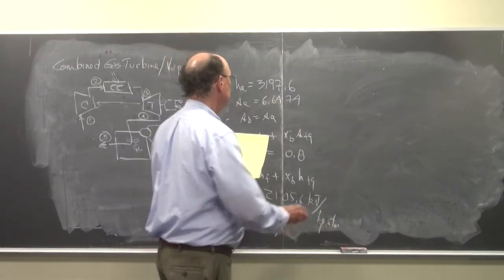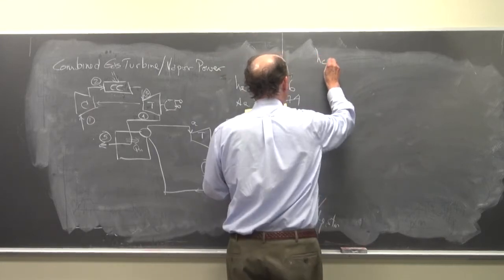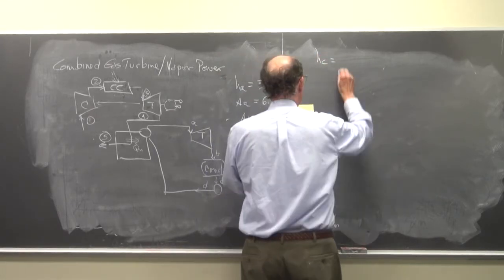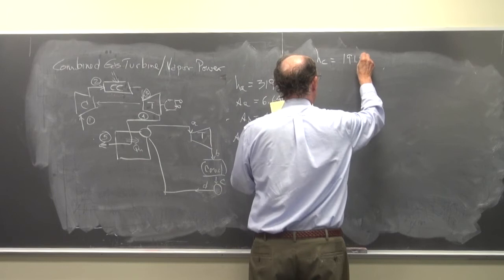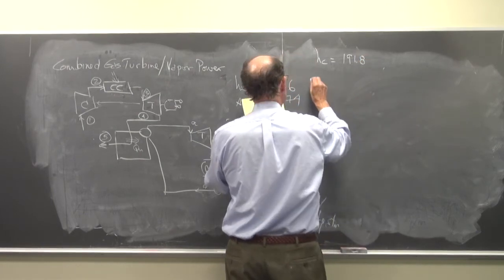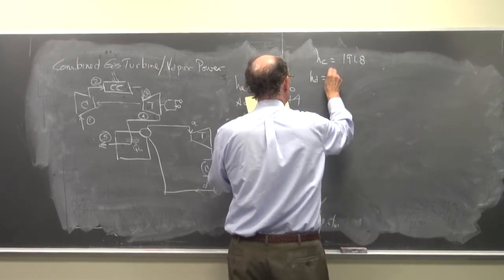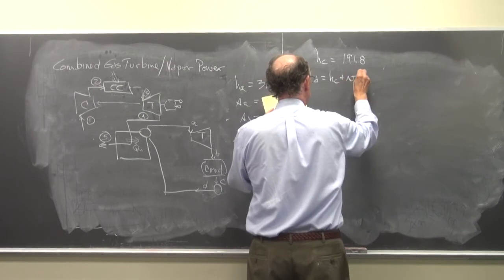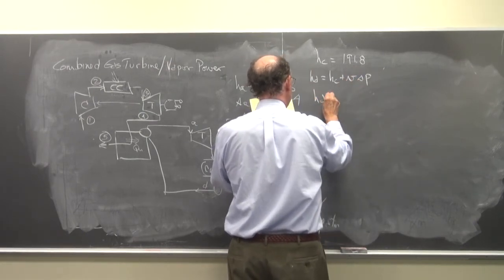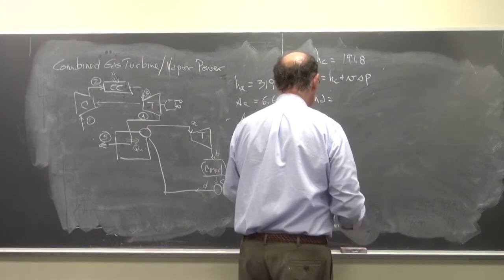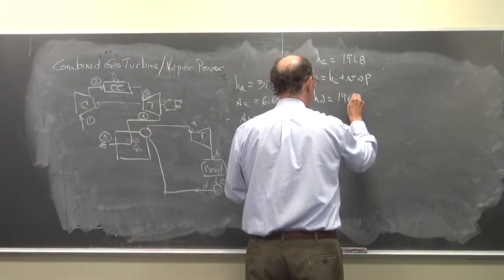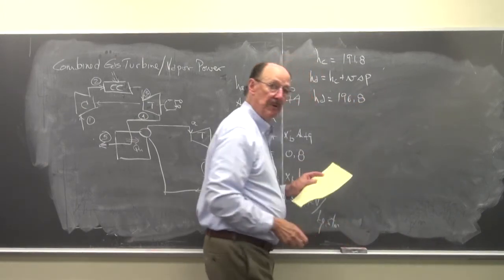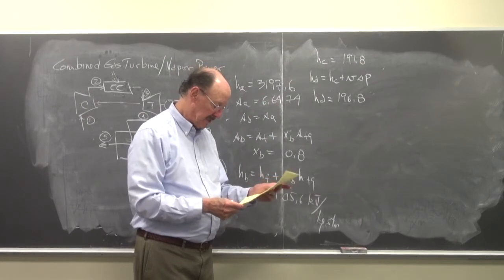And HC is 191.8. And HD is HC plus V delta P. So we have HD is equal to 196.8. So I took 5 kilojoules per kilogram to get there.